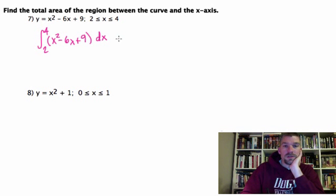So what we're going to end up having to do is figure out where x squared minus 6x plus 9 is equal to 0.